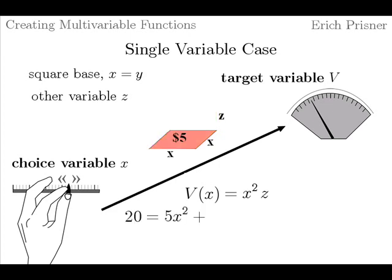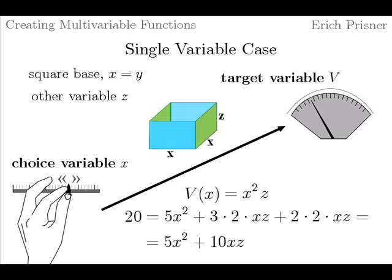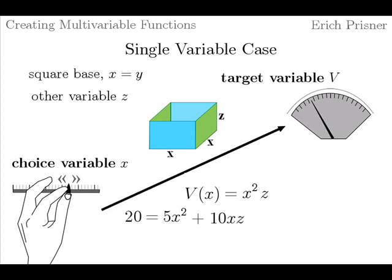The variables are related by some equations. The first one is a well-known volume formula for boxes: V equals X squared times Z. Since we know that the total cost of the box is the sum of the cost 5X squared for the square base, and the cost 3 times 2 times X times Z for the left and right sides, and the cost 2 times 2 times X times Z for the front and back side, and since we know that this total cost should be equal to 20, we get 20 equals 5X squared plus 3 times 2 times X times Z plus 2 times 2 times X times Z, which equals 5X squared plus 10 times X times Z.